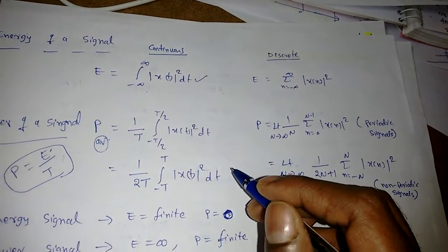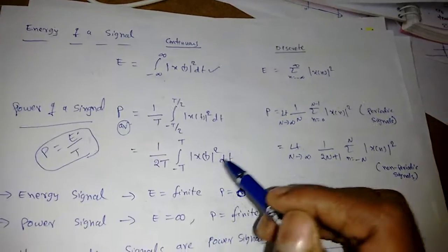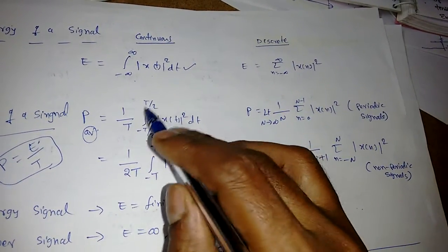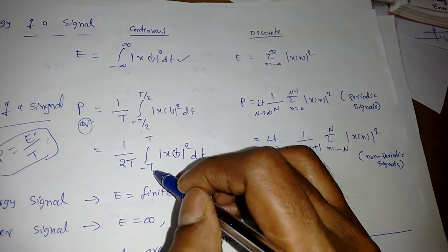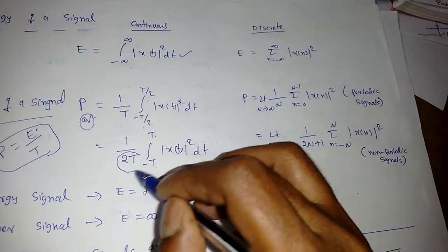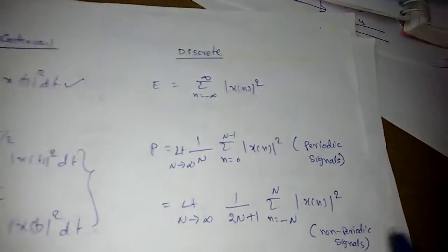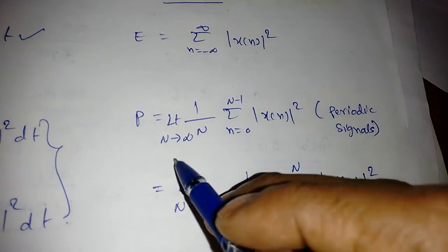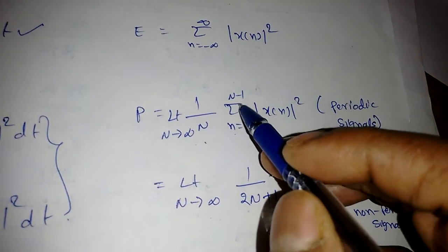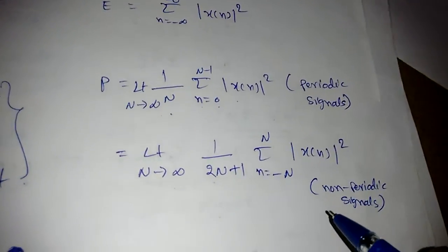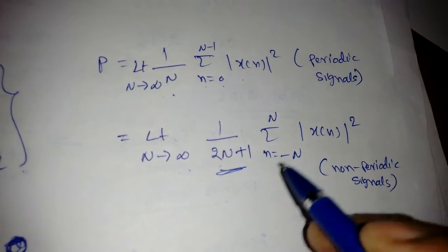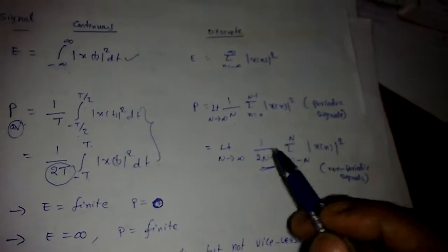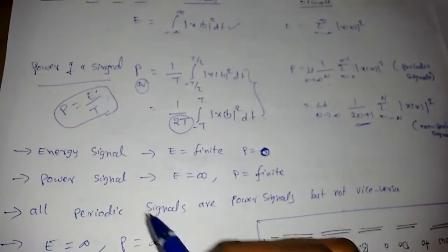Since power signals are infinite in duration, we use the limit form. For a periodic signal, P = (1/T)∫_{-T}^{T} |x(t)|² dt where the period is 2T in the denominator. For discrete periodic signals: P = lim_{N→∞} (1/N) Σ_{n=0}^{N-1} |x[n]|². For non-periodic discrete signals: P = lim_{N→∞} (1/(2N+1)) Σ_{n=-N}^{N} |x[n]|².